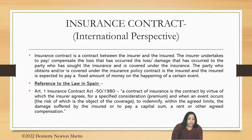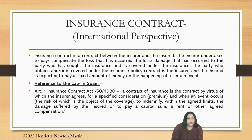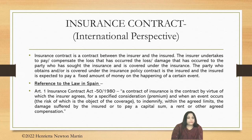Insurance contract is a contract between the insurer and the insured. The insurer is the insurance company — the one who insures. The insured is the party who is insured, also called the policyholder — the one who actually purchases the policy. The insurer undertakes to pay or compensate the loss or damage that has occurred to the party who has sought the insurance and is covered under the insurance.